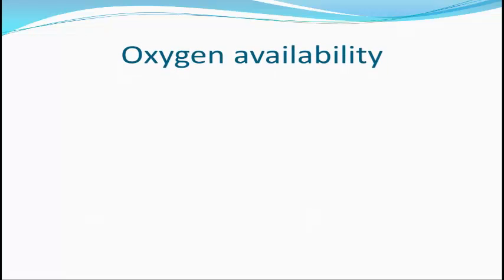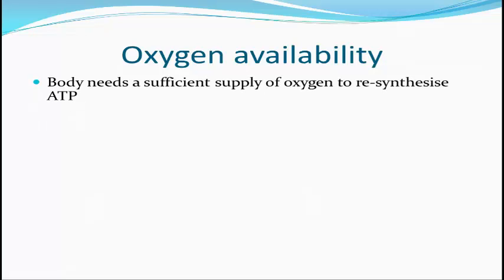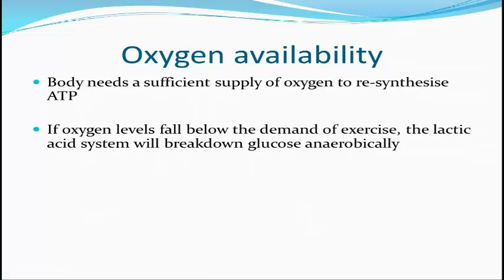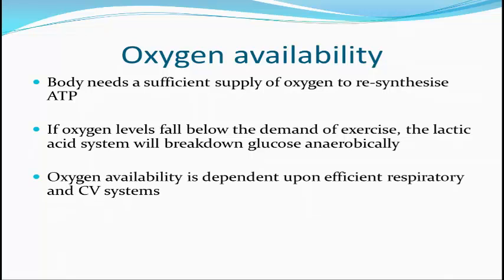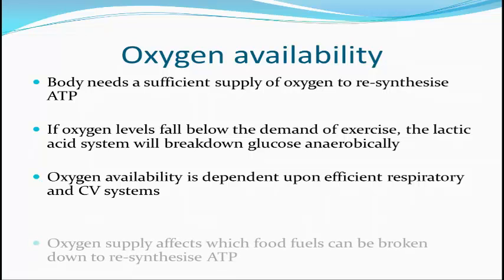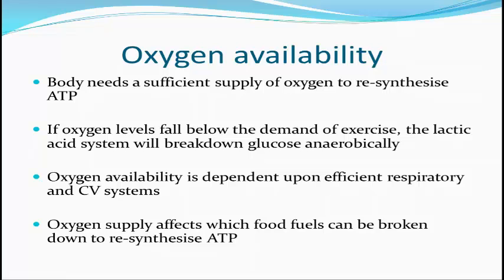The next factor is oxygen availability. Our body needs a sufficient supply of oxygen to resynthesize ATP. If our oxygen levels fall below the demand of exercise, that's a major problem and therefore we use our lactic acid system to break down glucose anaerobically, which produces lactic acid. We need efficient respiratory and cardiovascular systems to provide this oxygen availability. Oxygen supply also affects which food fuels can be broken down — to break down fats you require about 15% more oxygen, so oxygen supply plays a major part in which fuels you can use.